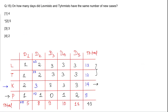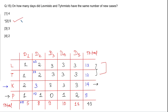Question 15: On how many days did L and T have the same number of cases? You can see that on all 5 days, L and T have the same number of cases.